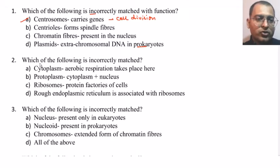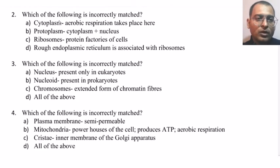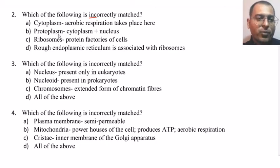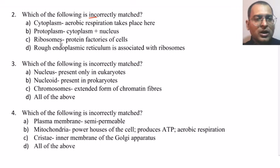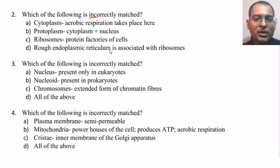Next question: which of the following is incorrectly matched? Cytoplasm — aerobic respiration takes place here; protoplasm — cytoplasm plus nucleus or nucleoplasm; ribosomes — protein factories of the cells; rough endoplasmic reticulum — associated with ribosomes.